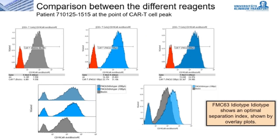To illustrate the improved separation index, a one-dimensional plot of the mean fluorescence intensity (MFI) is shown as a histogram and overlay plot. For those unfamiliar with flow cytometry: CAR-negative cells are shown in red, indirect staining with biotin-PE in gray, and FMC63 in light and dark blue. The FMC63 idiotype shows the best separation index; however, with the original stain, positive and negative fractions can also be separated very well. When very low CAR T-cell expression density is present — due to patient variability or exhausted samples at peak — the advantage of the better separation index of FMC63 becomes most apparent.